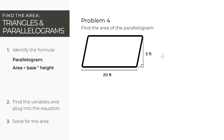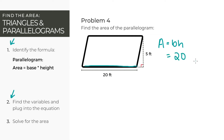Let's do one more parallelogram example. We're going to use the same formula where the area of the parallelogram is base times height. The base is this line here that the parallelogram is sitting on, which is 20 feet. The height of the parallelogram is this line here that is perpendicular, or 90 degrees to the base, which is 5 feet. Finally, solving the equation, the area of this parallelogram is the base, 20, times the height, 5, which is 100 feet squared.